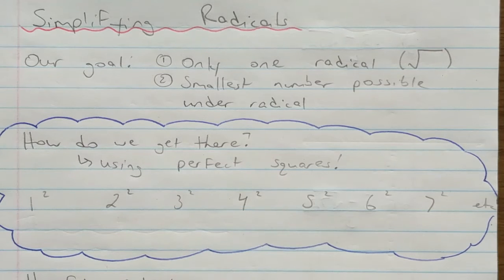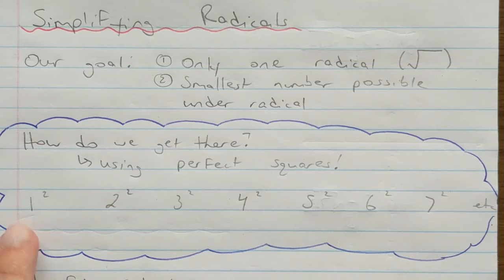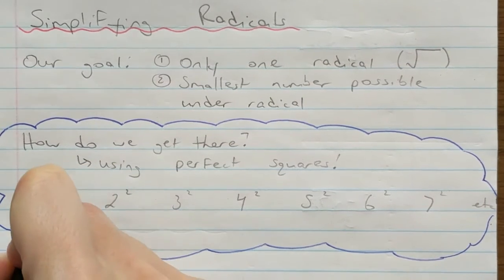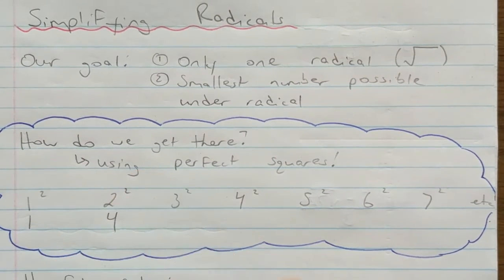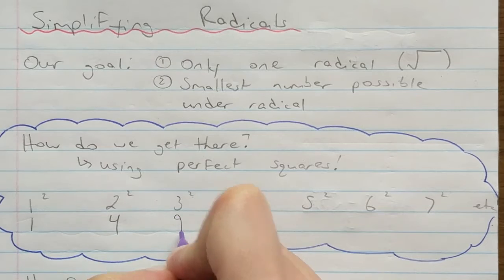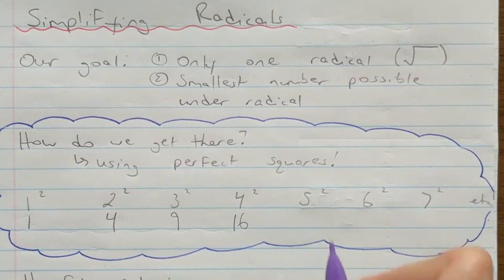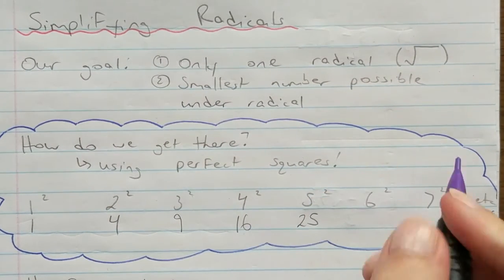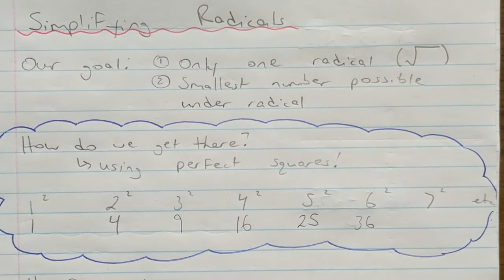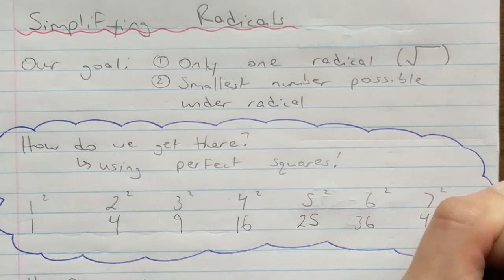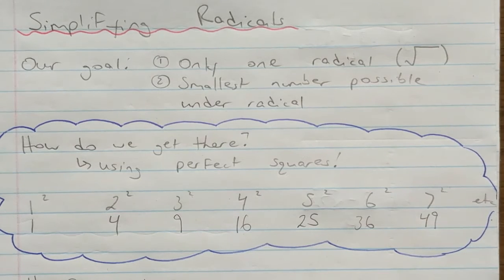We are going to get there by using our perfect squares. Perfect squares are numbers where you can take the square root and it comes out to a whole number. The first seven perfect squares are: 1 squared = 1, 2 squared = 4, 3 squared = 9, 4 squared = 16, 5 squared = 25, 6 squared = 36, and 7 squared = 49. Those are the most important ones — we're probably not going to work with anything larger than that.